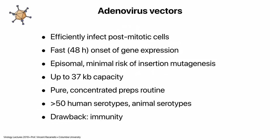You have fast onset of gene expression. It remains episomal — it doesn't integrate into the DNA, unlike some other vectors where integration can be a problem. It has a large capacity; we can remove almost all of the virus genome, giving almost 37 kilobases of coding capacity. You can make pure concentrated preparations, and there are lots of serotypes including animal adenoviruses. If you give someone an adenovirus and want to give it again, you can switch serotypes. The main drawback is that patients mount a strong immune response against these vectors.